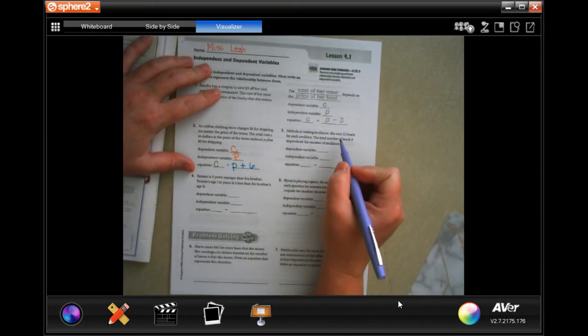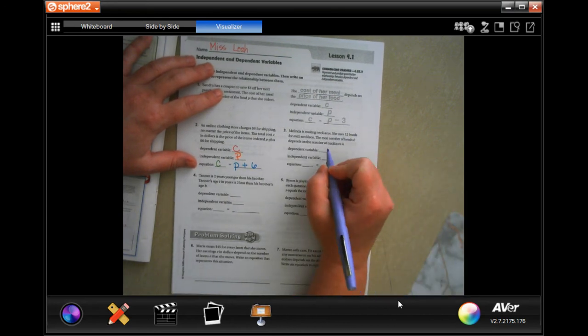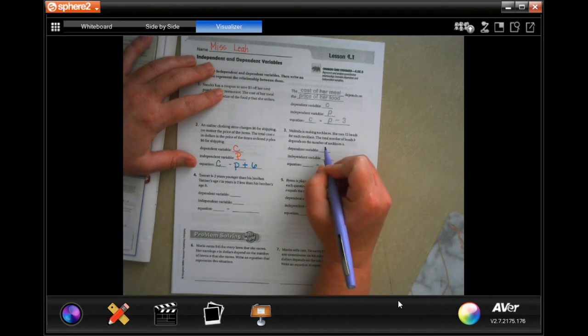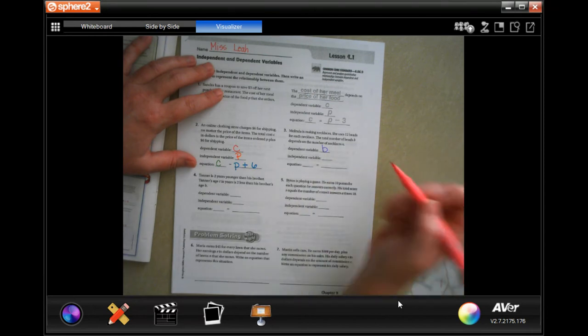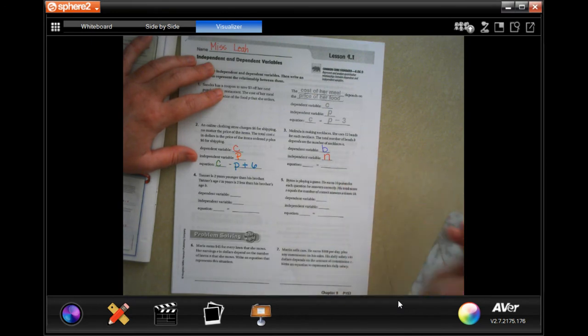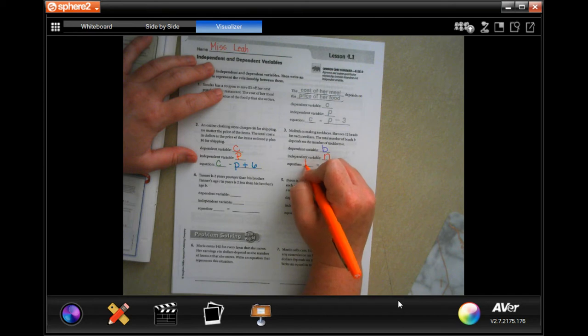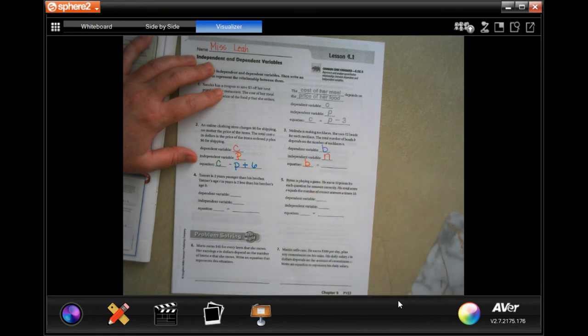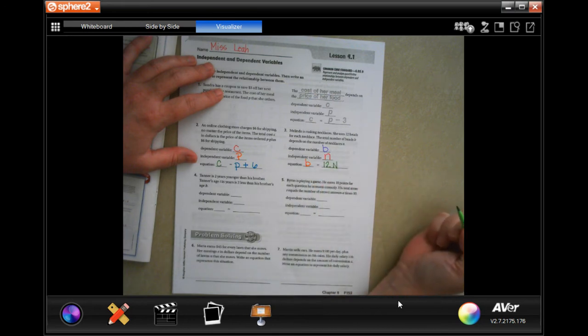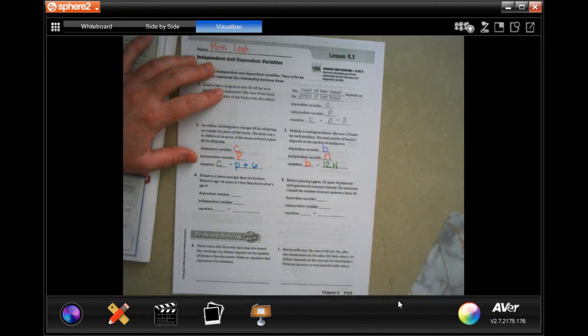Melinda is making necklaces. She uses 12 beads for each necklace. The total number of beads depends on the number of necklaces. So the dependent variable, the number of beads depends on how many necklaces. So B is going to be the dependent one. The independent one is going to be how many necklaces. How many necklaces doesn't depend on how many beads she uses. How many beads she uses depends on how many necklaces she makes. So now your equation is going to be the number of beads depends on 12 beads per necklace.